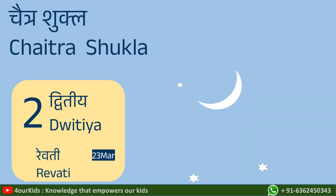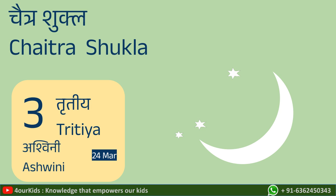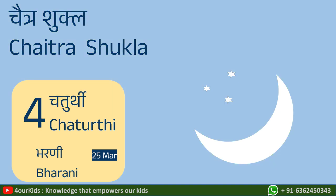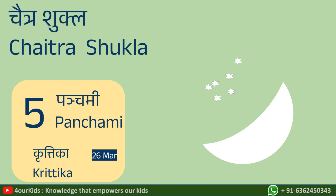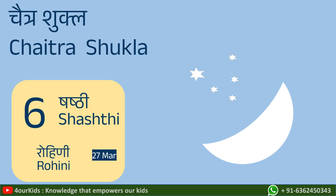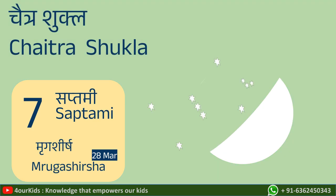On Dvitiya, 23rd March, the moon will be slightly bigger near a small nakshatra called Revati. On Tritiya, 24th March, the moon will be near Ashwini nakshatra — a small group of three stars. On Chaturthi, 25th March, the moon is slightly bigger near Bharani — three faint stars. On Panchami, the moon is slightly bigger near Krittika — a group of six stars. On Shashti, 27th March, it is near Rohini — a group of five stars with one very bright star in a V-shape.